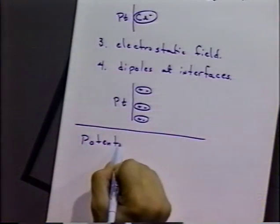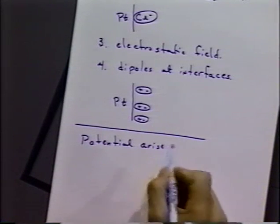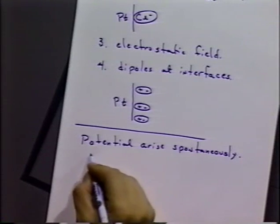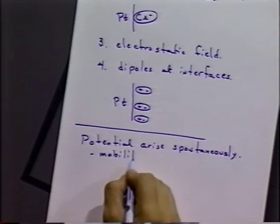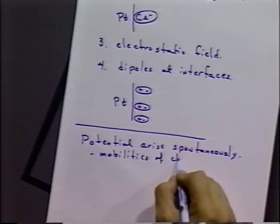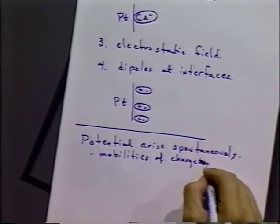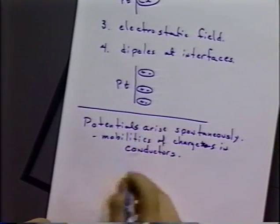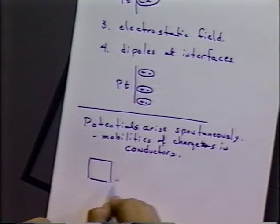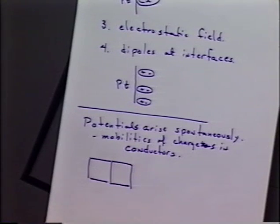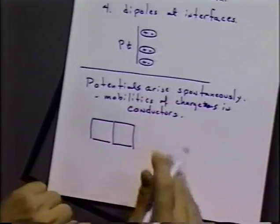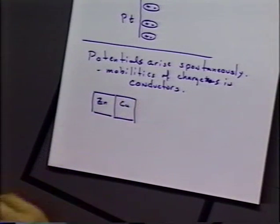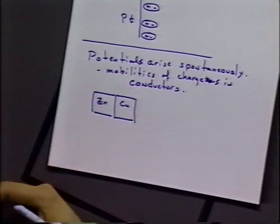Potentials arise spontaneously due to the mobility of charges in conductors. Metals have a Fermi level - a preferred energy level for electrons in the system. If we have different metals with different Fermi levels and put them in contact with each other, the electrons will equalize to form equal Fermi levels in each case because there is electrical conduction between the two metals.